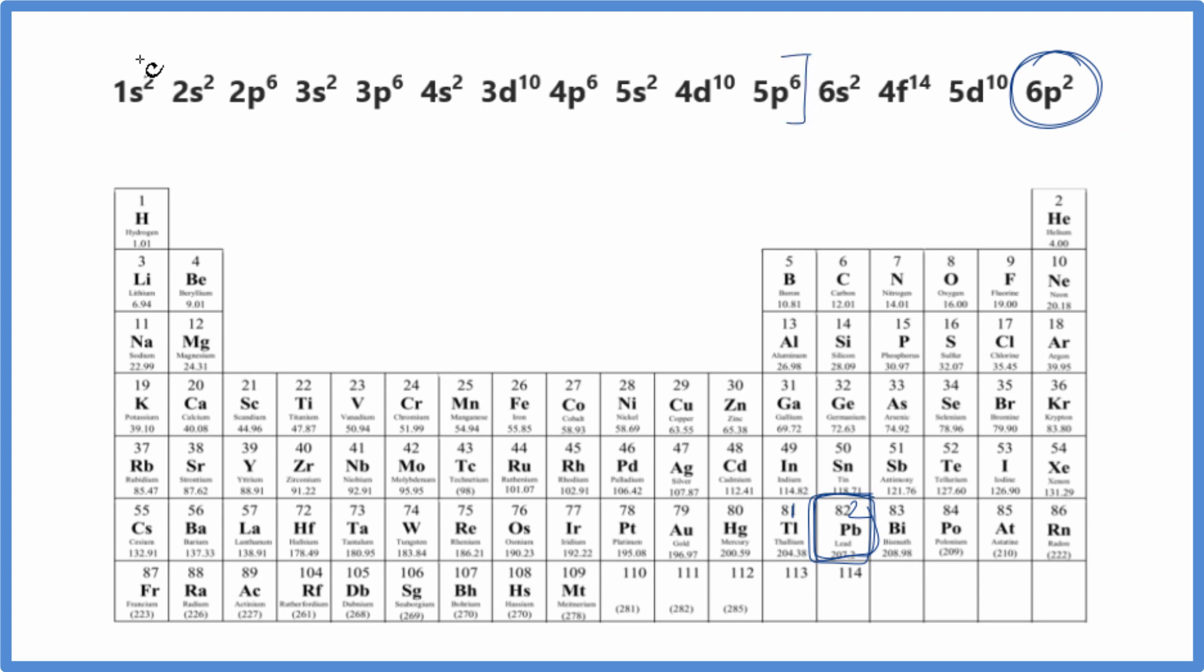So this is the electron configuration for xenon. We can just write Xe and then the rest of this right here. So this would be the condensed notation for lead.